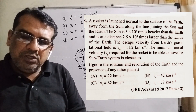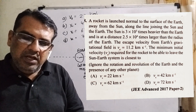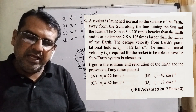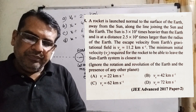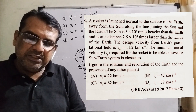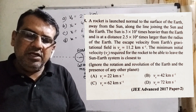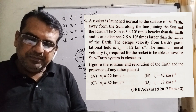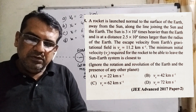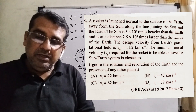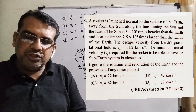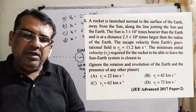A rocket is launched normal to the surface of the Earth, away from the Sun, along the line joining the Sun and the Earth. The Sun is 3 × 10⁵ times heavier than the Earth, and is at a distance 2.5 × 10⁴ times larger than the radius of the Earth. The escape velocity from Earth's gravitational field, Ve = 11.2 km/s. Find the minimum initial velocity required for the rocket to be able to leave the Sun-Earth system. Ignore the rotation and revolution of the Earth and the presence of any other planet.